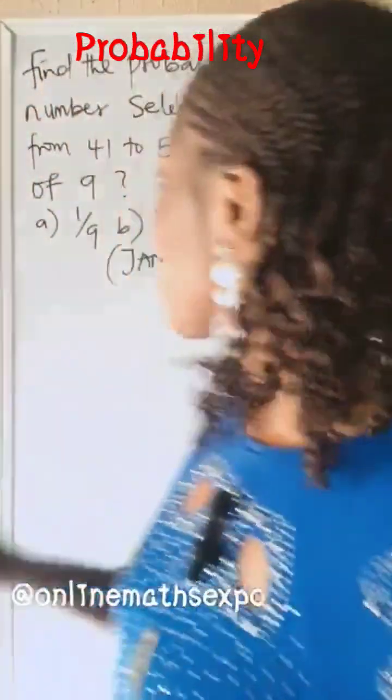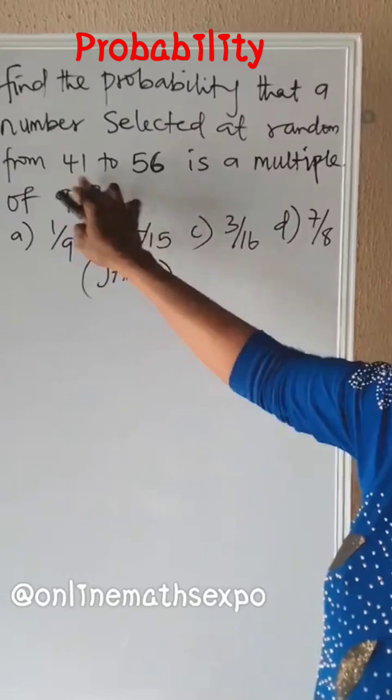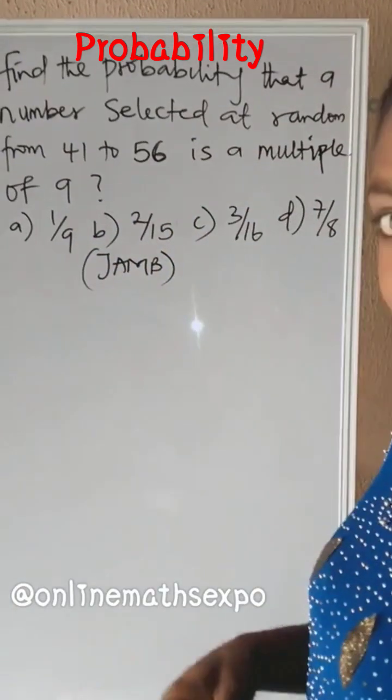Welcome back to my channel. We are solving this problem: find the probability that a number selected at random from 41 to 56 is a multiple of 9.